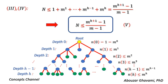We obtained that n ≤ 1 + m^1 + ... + m^(h−1) + m^h = (m^(h+1) − 1) / (m − 1). Therefore, n ≤ (m^(h+1) − 1) / (m − 1).